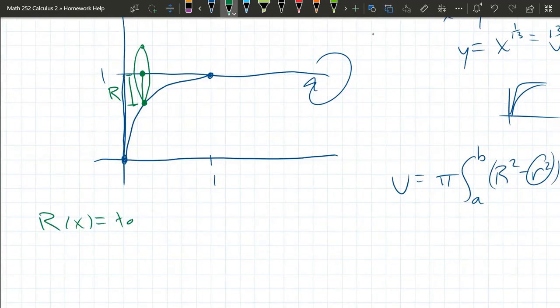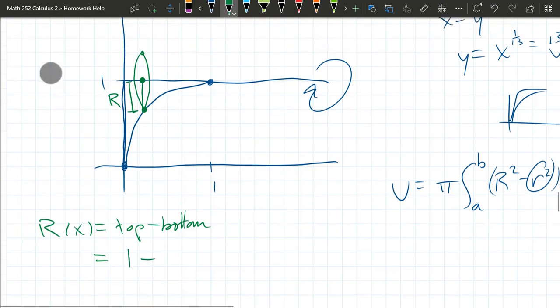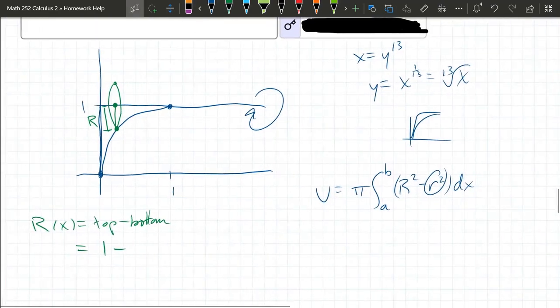All right, so it's top minus bottom, or big minus small. So the top is the Y equals 1. So the top is 1. Now what's the bottom? The bottom is that curve.